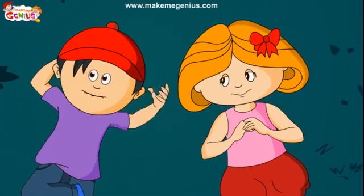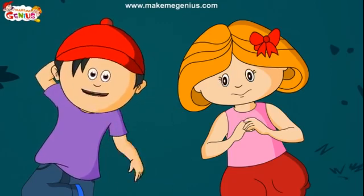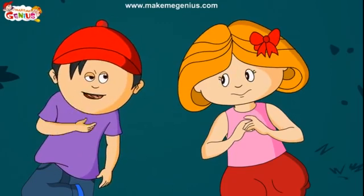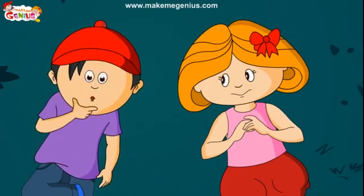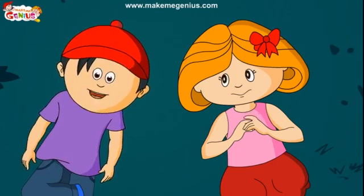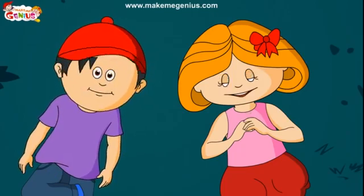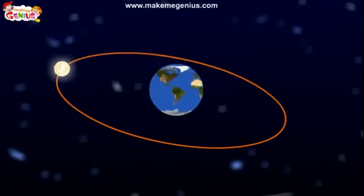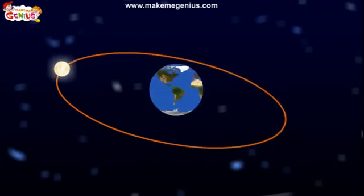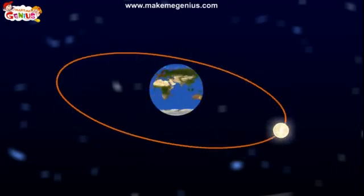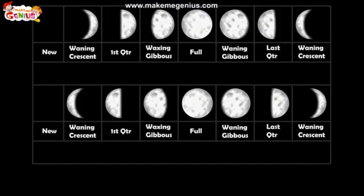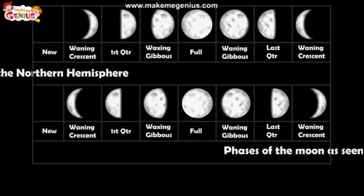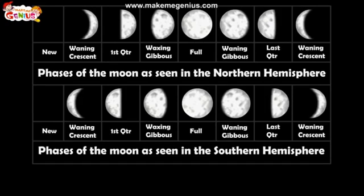I never understand why the moon plays hide and seek with us. I could not find the moon in the sky a few nights back. Do you know why that happens? The moon keeps on changing its shape because of its revolution around the earth. The different shapes of the moon are called the phases of the moon.